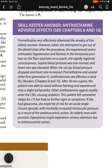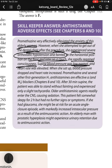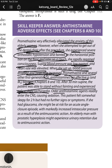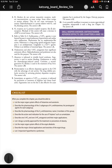Skill keeper answer: Promethazine effectively alleviated the patient's anxiety, but when she tried to stand, she experienced severe orthostatic hypotension and fainted. Promethazine and several other first-generation H1 antihistamines are effective alpha blockers and M3 blockers — hence the autonomic effects. After 30 minutes supine, the patient could stand with only slight tachycardia. Older antihistamines readily enter the CNS causing sedation. A patient with glaucoma would be at risk for acute angle closure due to anti-muscarinic action; an elderly man with prostatic hyperplasia might experience urinary retention for the same reason.